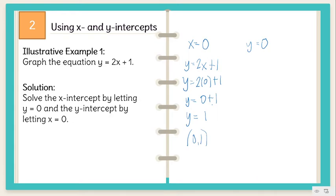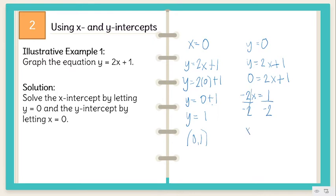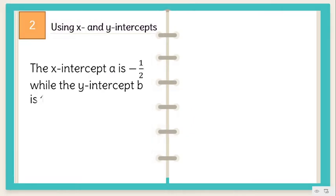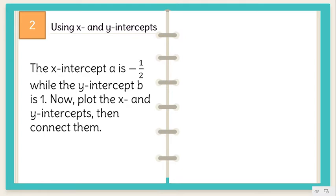When Y equals 0, substitute 0 to Y. Y is equal to 2X plus 1, so 0 is equal to 2X plus 1. Transpose 2X to the left, so negative 2X is equal to 1. Divide both sides by negative 2 to get the value of X. So X is equal to negative 1 half. When Y is equal to 0, X is negative 1 half. Thus, we have the point (negative 1 half, 0). The X intercept A is negative 1 half, while the Y intercept B is 1.